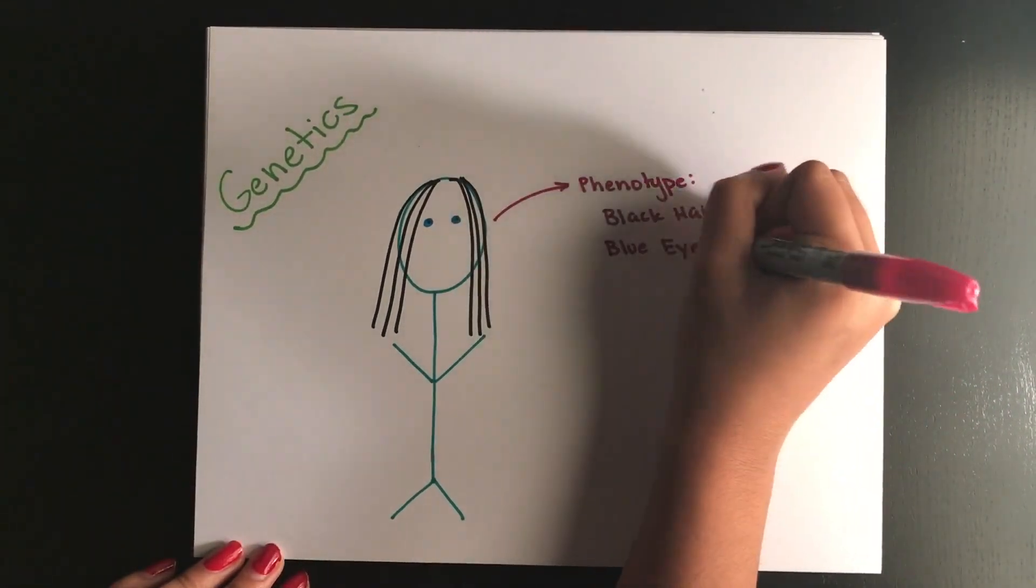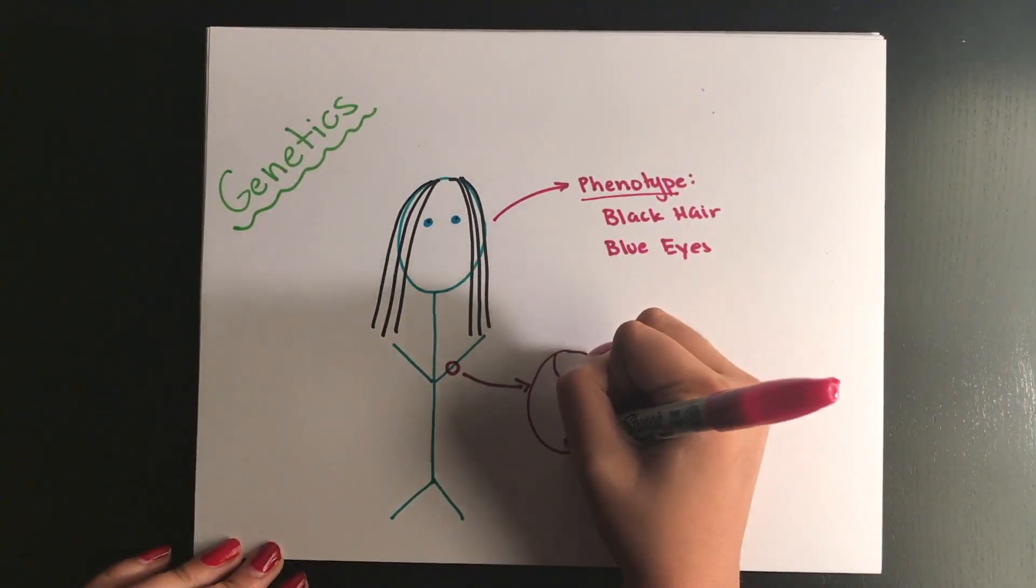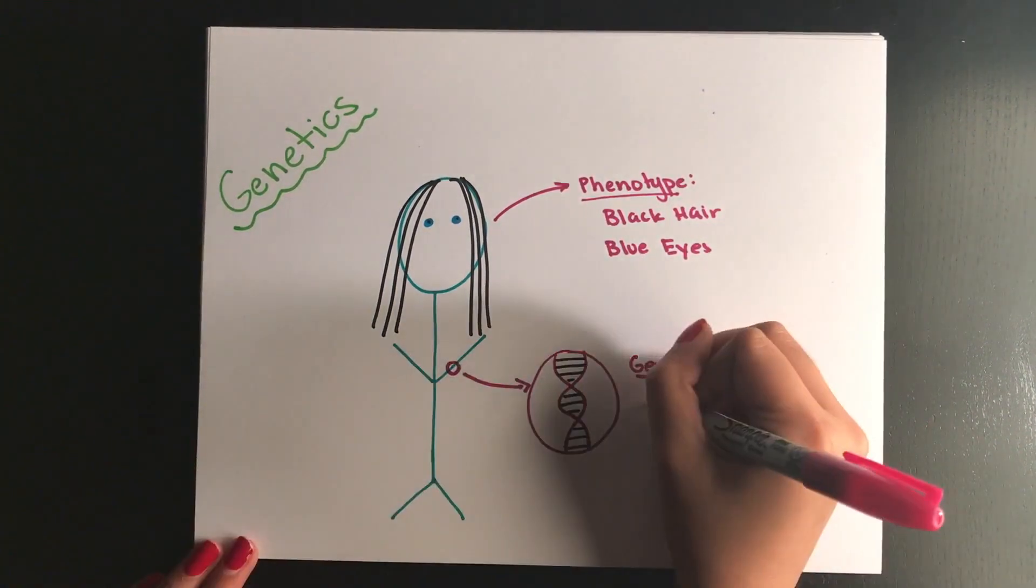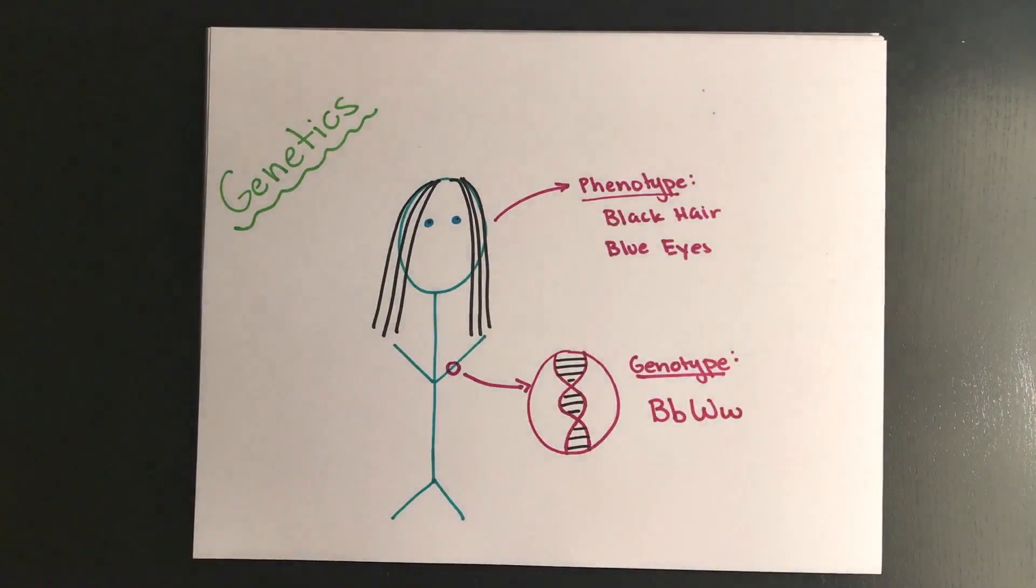Phenotype refers to the physical traits in an organism and genotype refers to the genes responsible for the expressed traits. Dominant traits will be expressed in the phenotype over recessive traits, always.